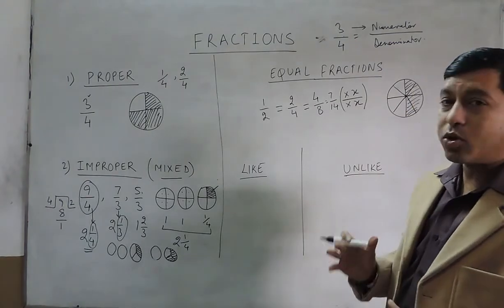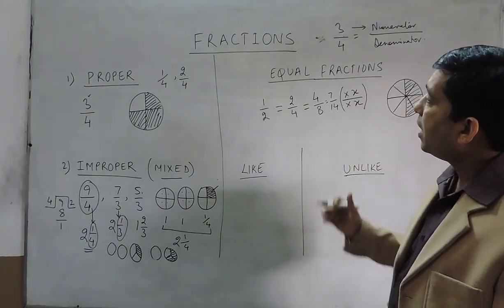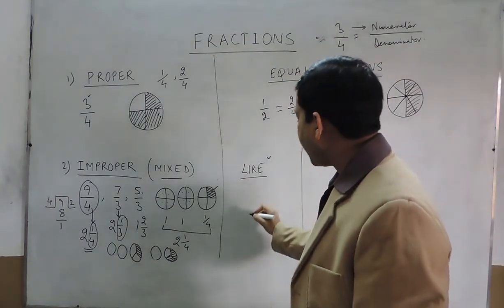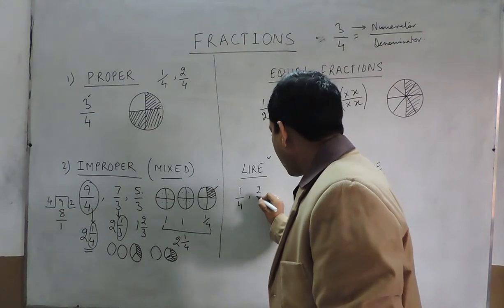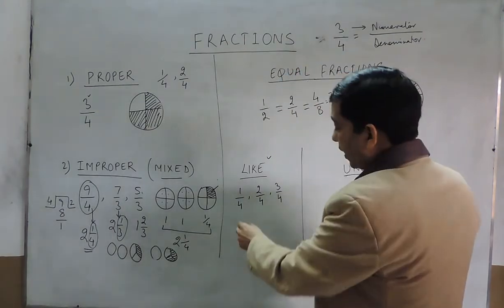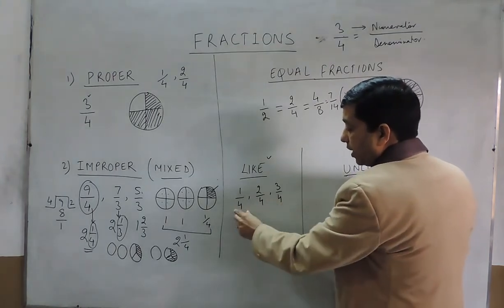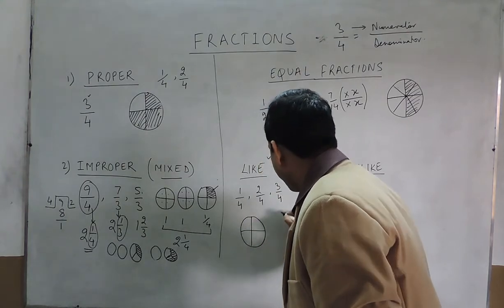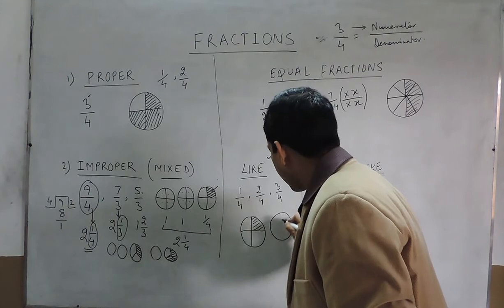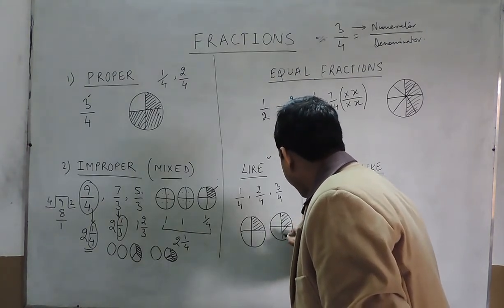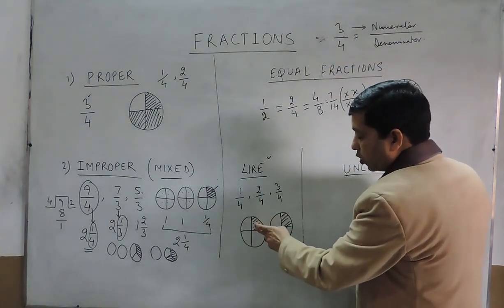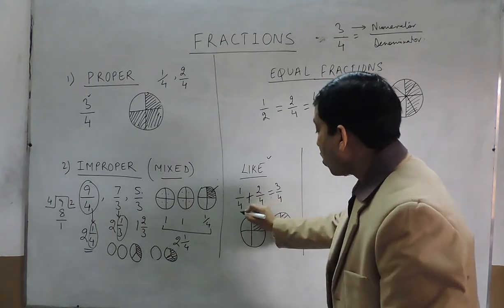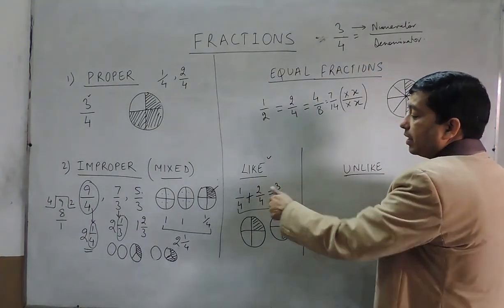Once we talk about fractions, it is also important to know how to add or subtract them. In addition and subtraction, we need to understand like fractions and unlike fractions. Like fractions are simple — if the denominator is the same everywhere, such as 1 upon 4, 2 upon 4, or 3 upon 4, then these are known as like fractions. It is very simple to add two like fractions. For example, one part out of four added to two parts out of four becomes three parts out of four.